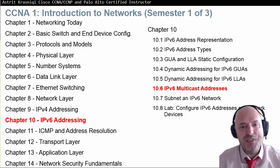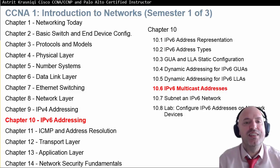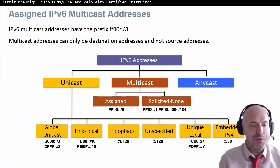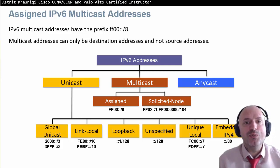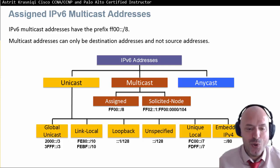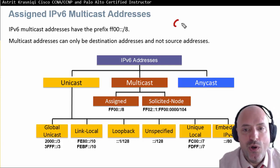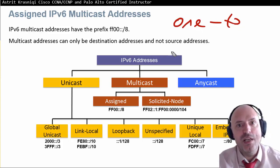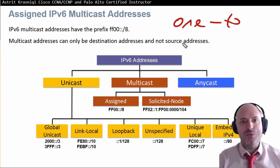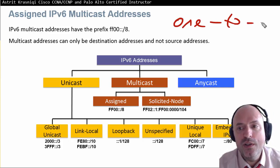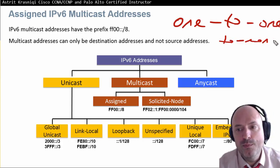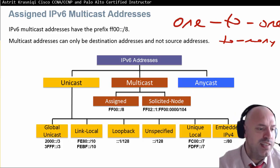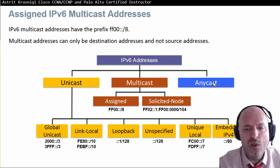Hello and thank you for watching the sixth lesson of chapter 10, which is 10.6 IPv6 multicast addresses. We already talked about different types of communication in IPv6 — unicast, multicast, and anycast. Unicast is one-to-one, multicast is one-to-a-group, and anycast is one-to-the-nearest. The source is always one; multicast can never be a source.